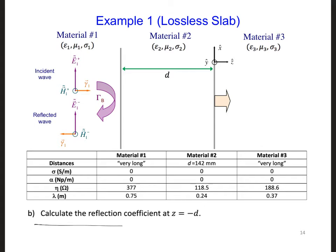Now, see if you can answer part B. Calculate the reflection coefficient at z equals minus d. So we just calculated the input impedance at this location. And so now see if you can calculate the reflection coefficient. This right here is what we want to calculate.